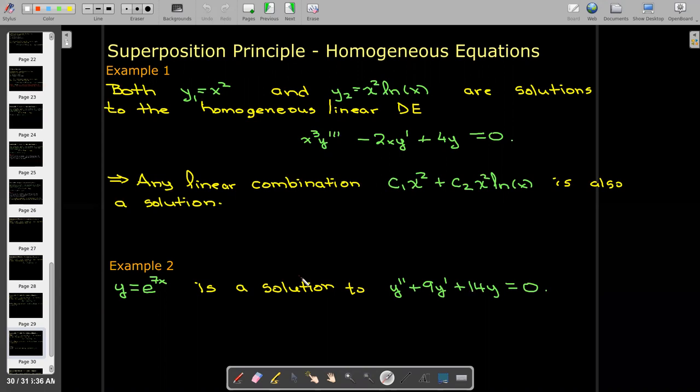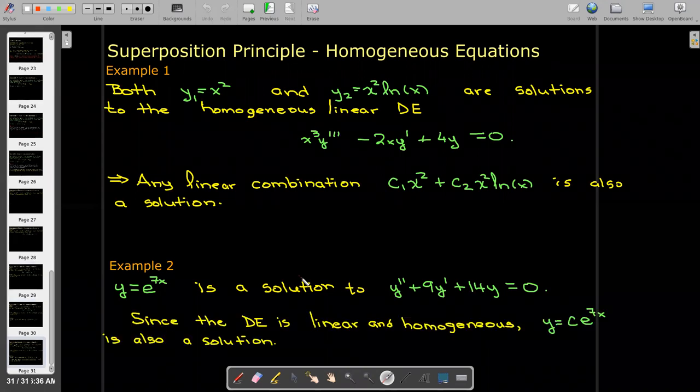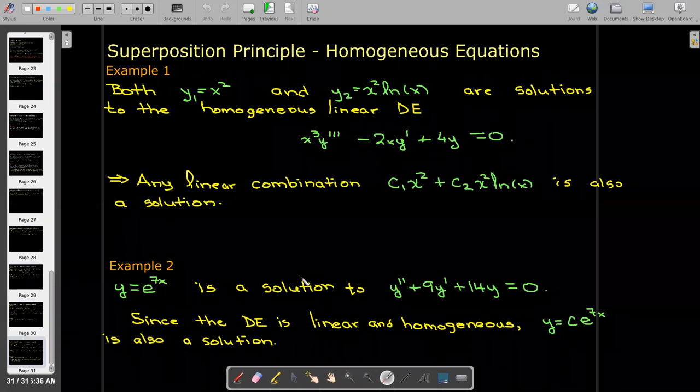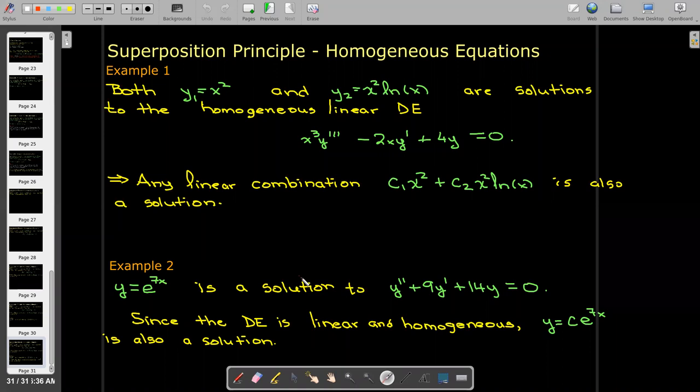Here's another example. Y equals e to the power of 7x is a solution to this second order differential equation. So I could multiply that solution by any constant I want, including zero, and I'll get a new solution.